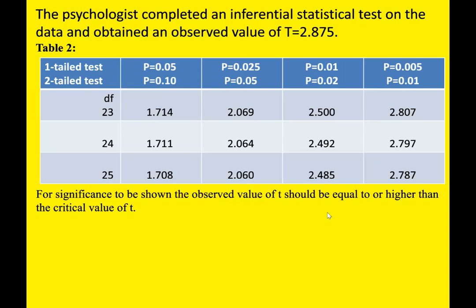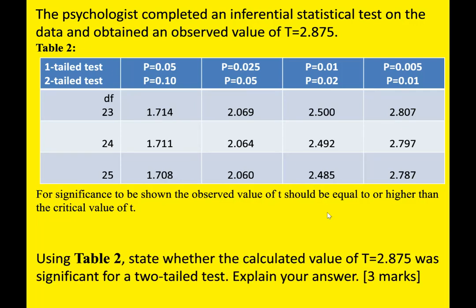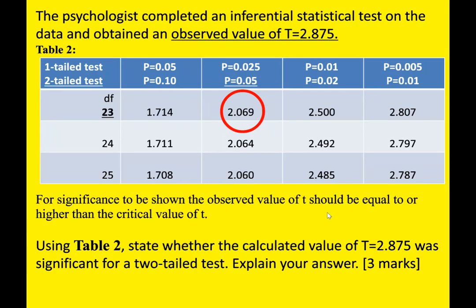Underneath the table it says: for significance to be shown, the observed value of t should be equal to or higher than the critical value of t. Then it will give you the actual question. This is the question you get before the Type 1/Type 2 error question — it says: 'Using Table 2, state whether the calculated value of t equals 2.875 was significant for a two-tailed test; explain your answer.' So you work out your critical value from the blue critical values table and compare it to the calculated value. Our observed/calculated value is t = 2.875.